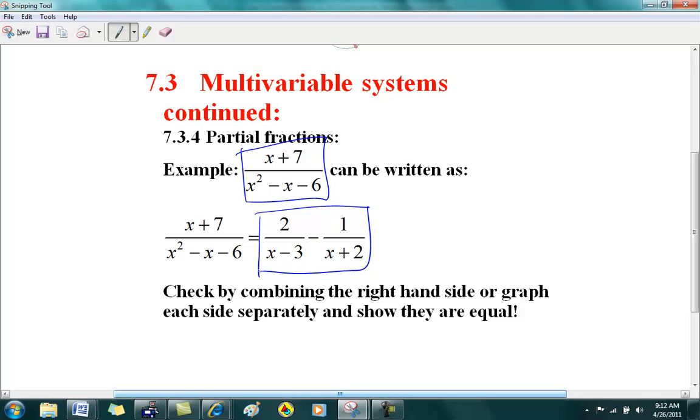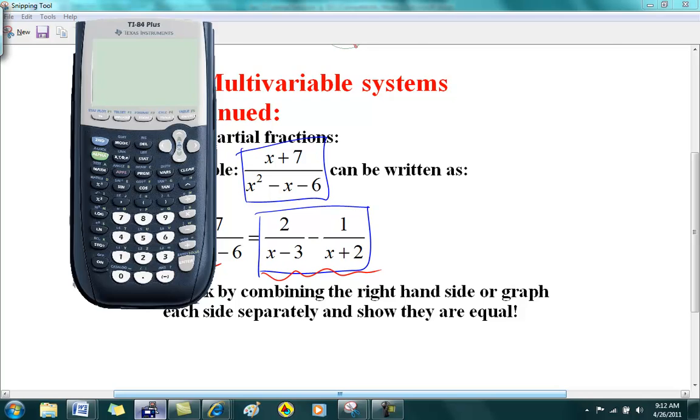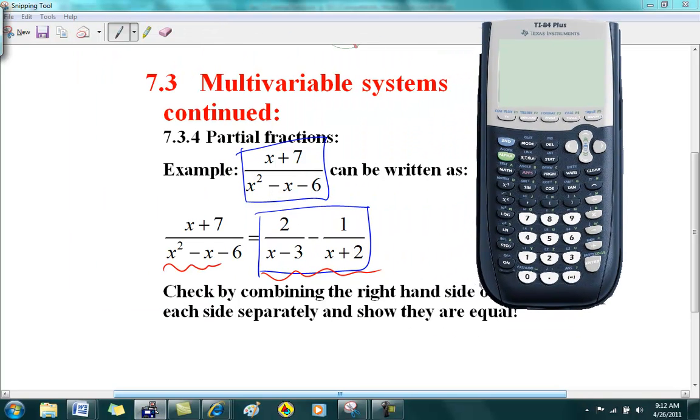Okay, so my claim to you is that these two things are equal. What I mean is this is equal, and we can see that if you want to put this in a graph and calculate and graph each side. Okay, so I'm just going to go ahead and do that for you. Go into y equals. Clear that. Enter the two sides. Please make sure you're using parentheses appropriately. And then I get x plus 7 over x squared minus x minus 6.